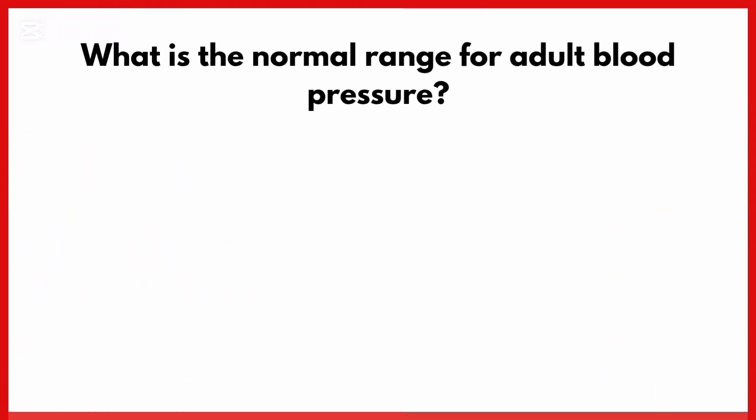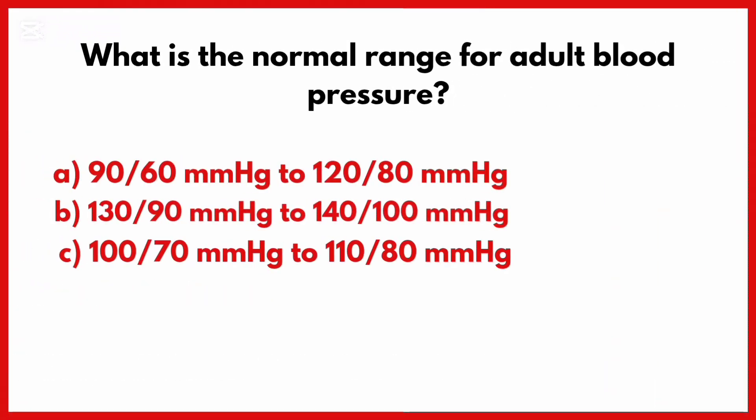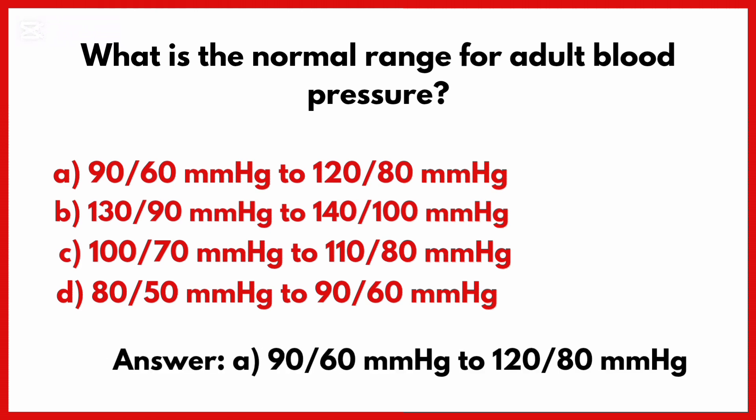What is the normal range for adult blood pressure? Correct answer is option A: 90 over 60 to 120 over 80.